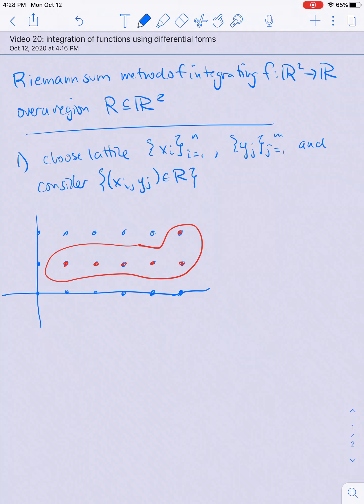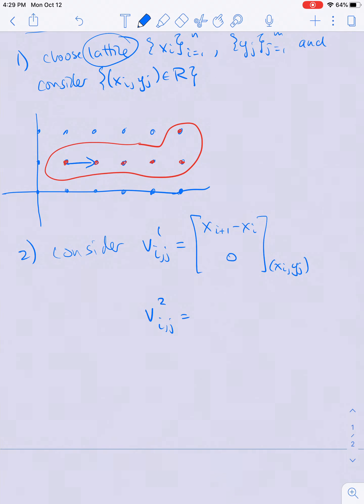Then for each point I'm going to consider two vectors v₁ and v₂. At the point (i,j), I'm going to define the first vector to have its x coordinate be the difference between the x values: x_{i+1} minus x_i. This quantity might depend on i, and this is in the tangent space to (x_i, y_j). Then v₂ is the y difference: y_{j+1} minus y_j in the same tangent space.